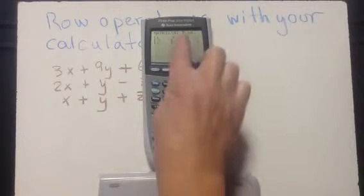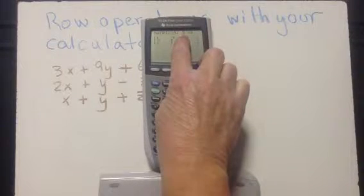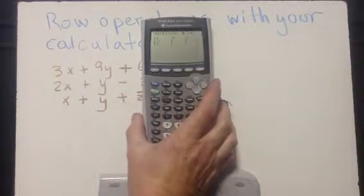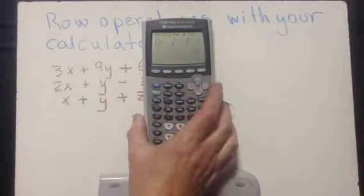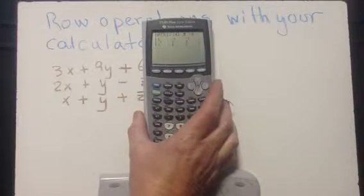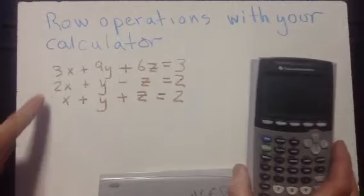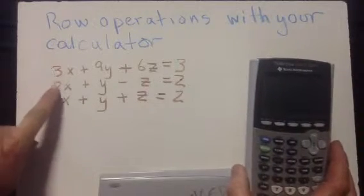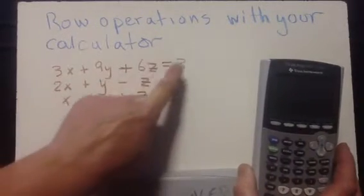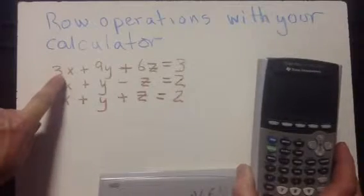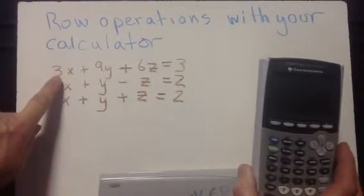Now, first of all, you tell it how many rows, how many columns you want. Since 3 by 4 is already correct, I can just go ahead and start entering data. Again, my matrix is 3 rows by 4 columns, and all I'm interested in is the coefficients.